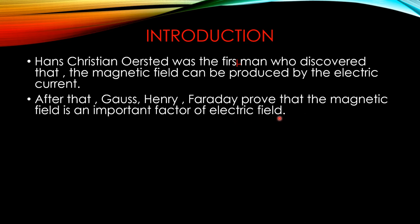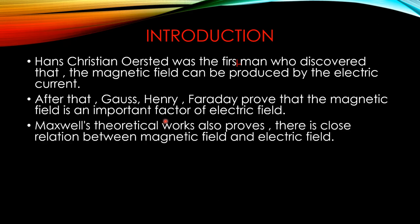In the introduction: Hans Christian Ørsted, the scientist, showed that if you pass electric current through a conducting material, a magnetic field develops there. Based on this study, other scientists such as Gauss, Henry, and Faraday proved that there is a particular relation between the magnetic field and the electric field. Many other scientists also proved this with their own theories and wrote articles, and based on those, machines were developed that work on these principles.